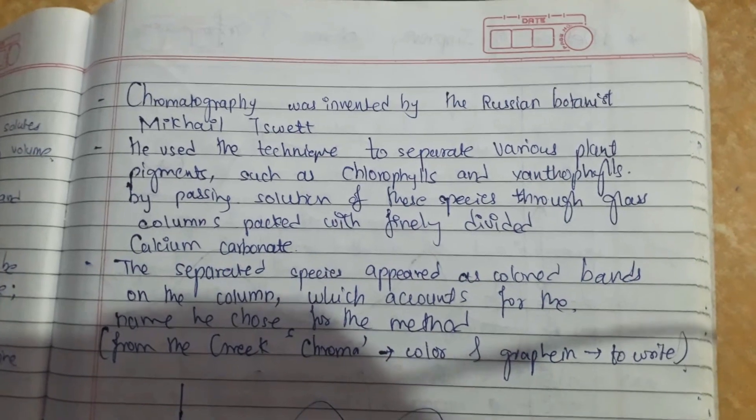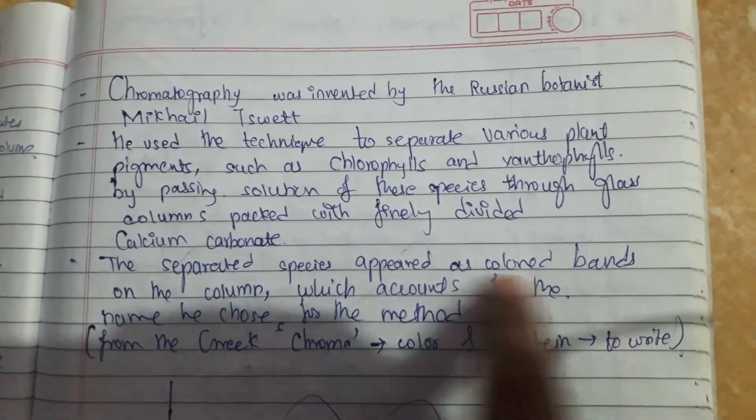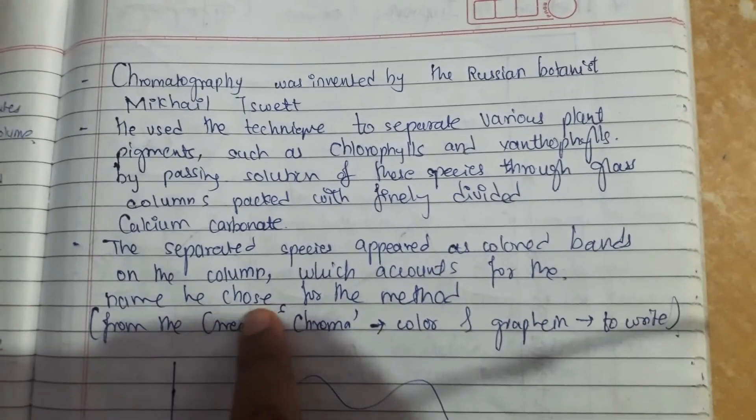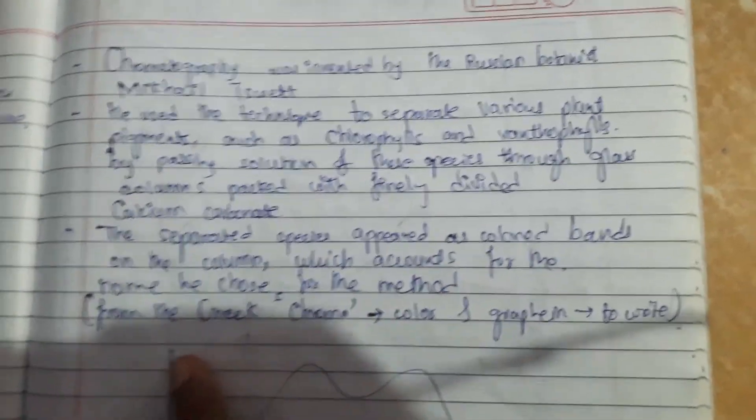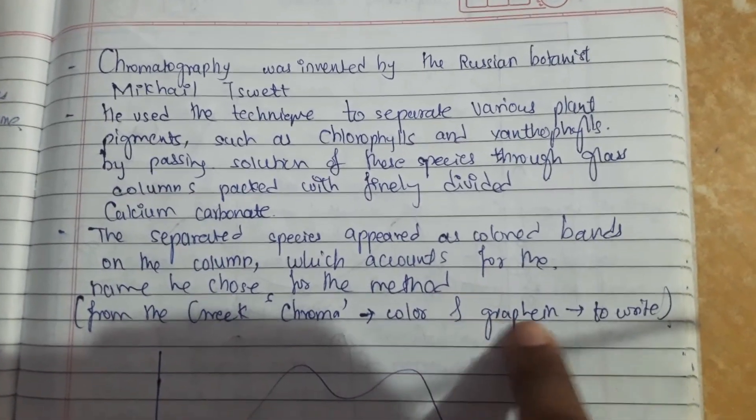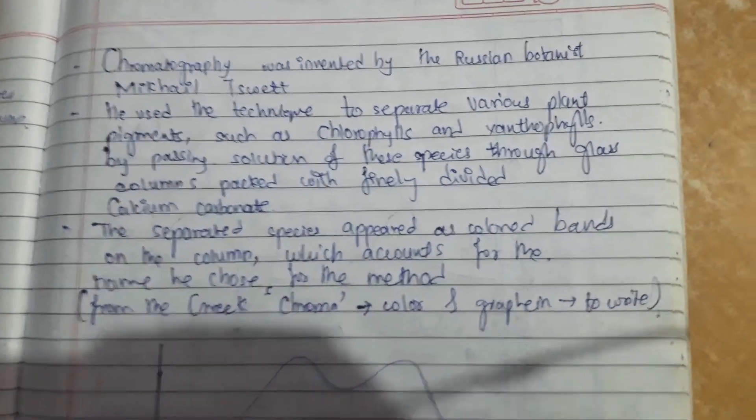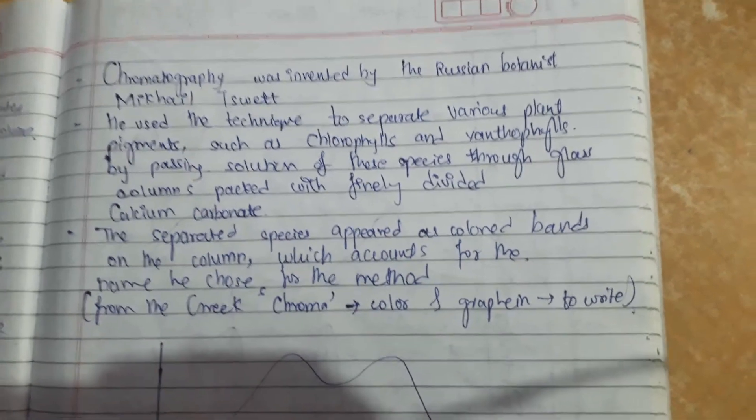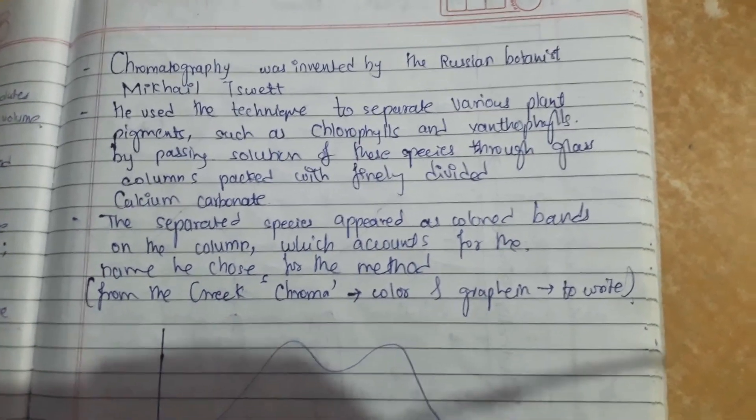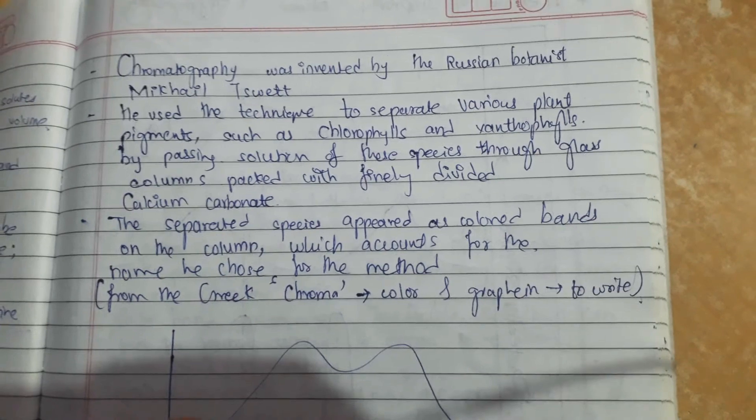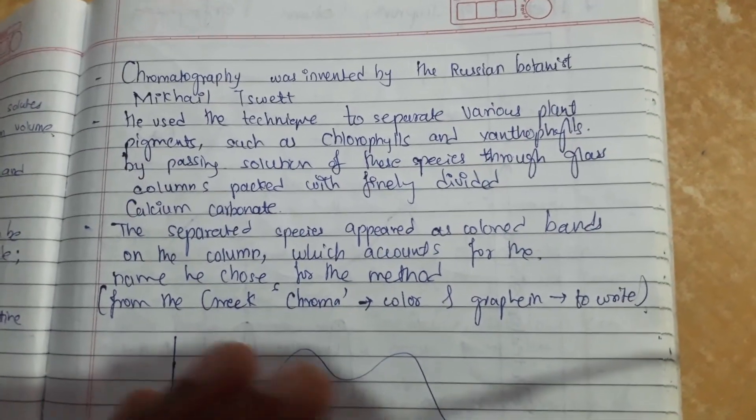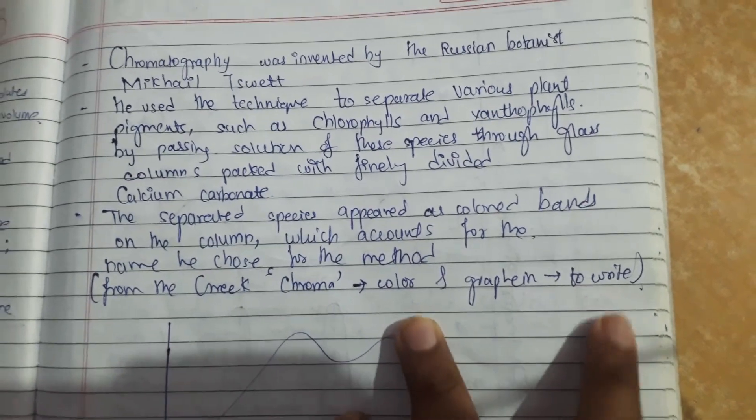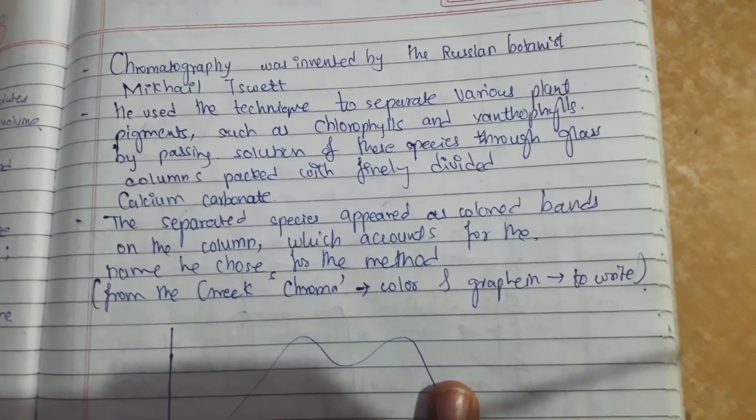The separated species appeared as colored bands on the column, which accounts for the name he chose for the method. The Greek words chroma meaning color and graphine meaning to write. When he separated the compounds, colored bands appeared on the column, so he called this method chromatography, from the Greek words chroma, color, and graphine, to write.